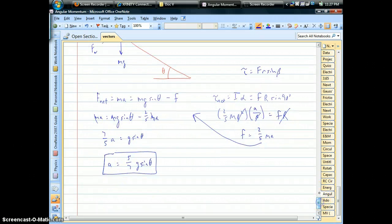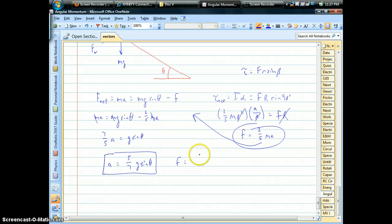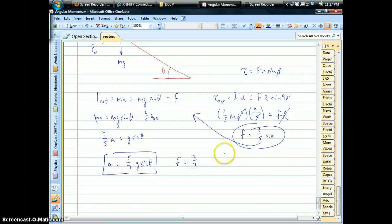So we get the acceleration. Once we have the acceleration, I suppose we could plug it into the friction equation. That tells us how strong friction has to be in order for there to be no slippage. So that's going to be 2 fifths times 5 sevenths. That's going to be 2 sevenths mg sine of the angle of the hill.